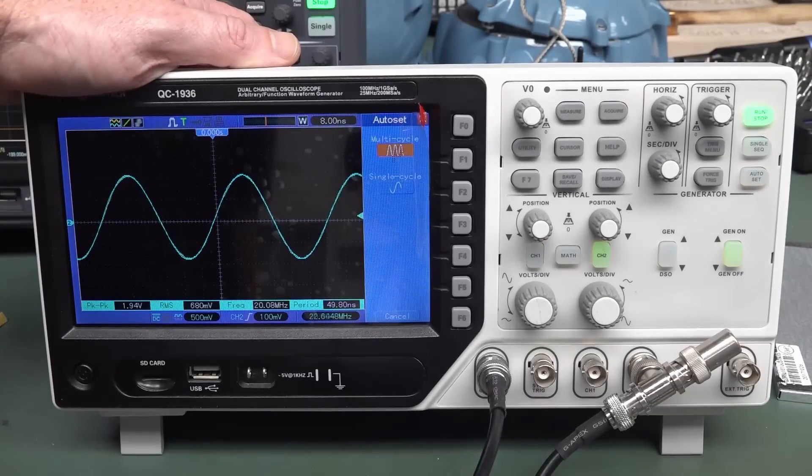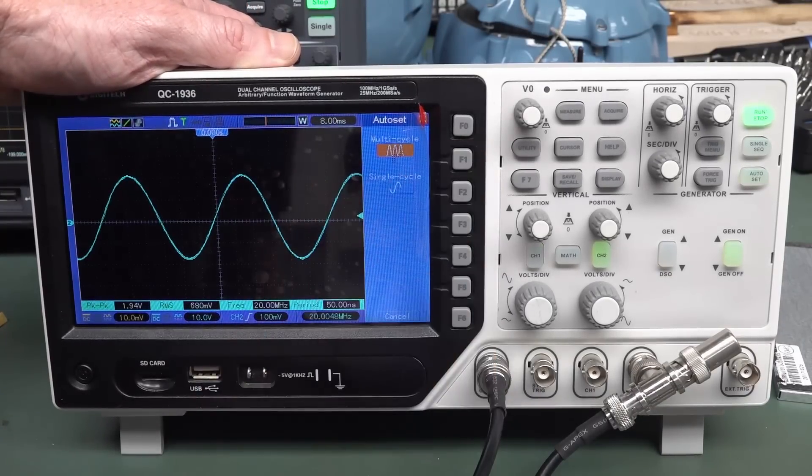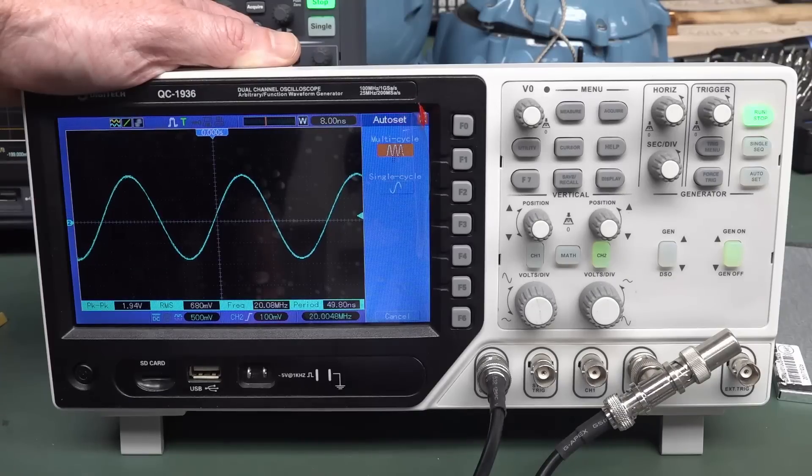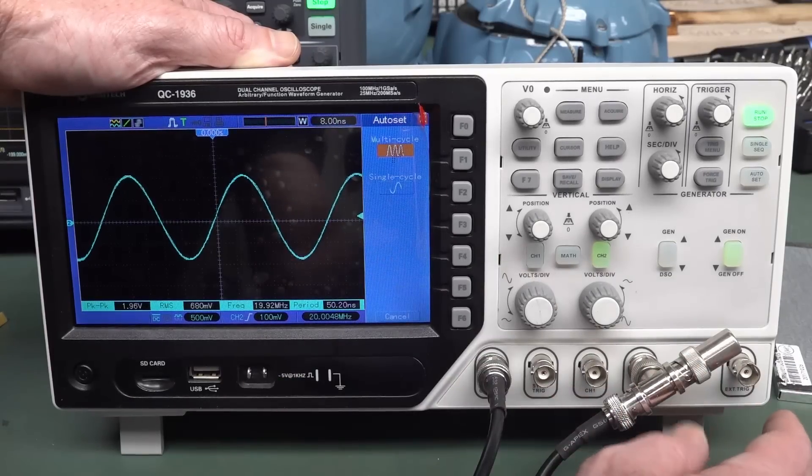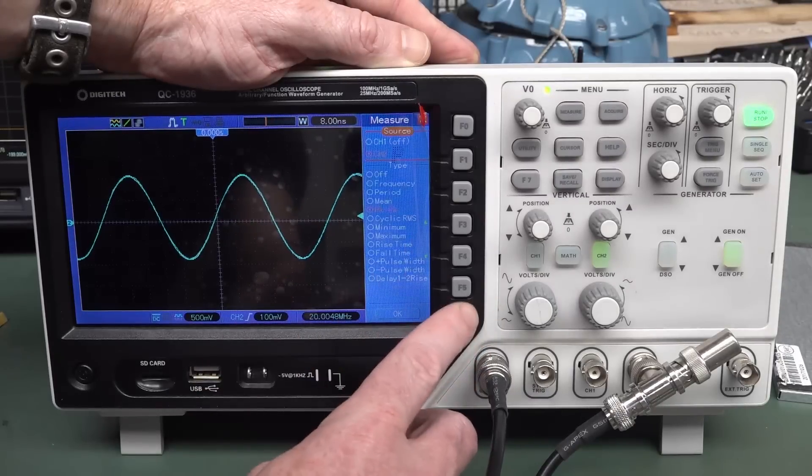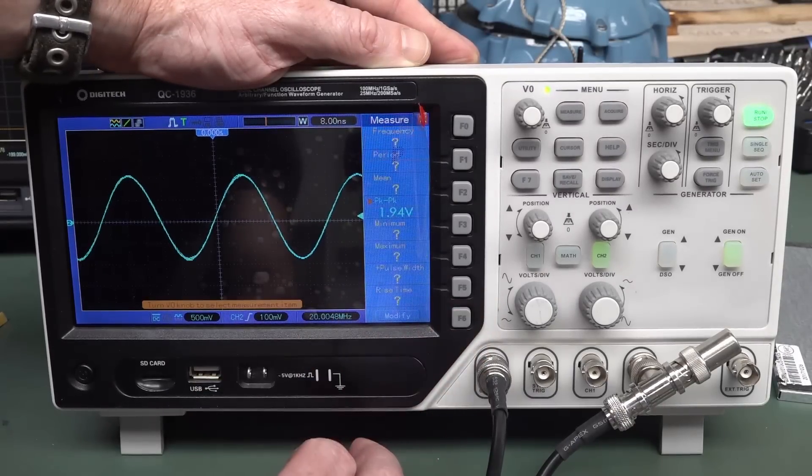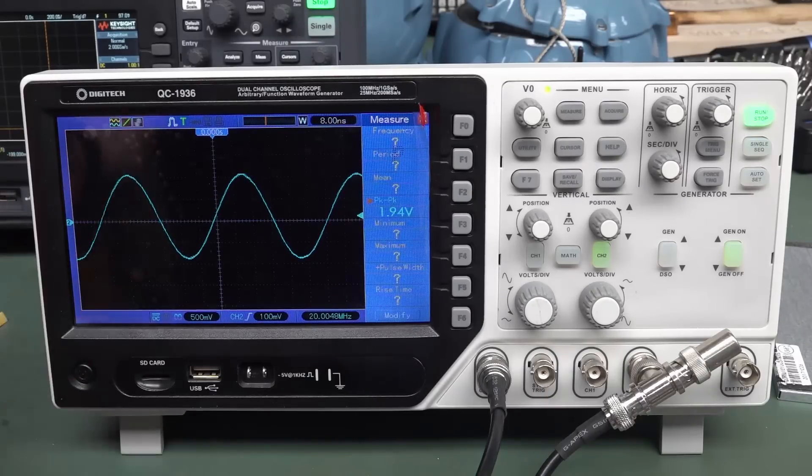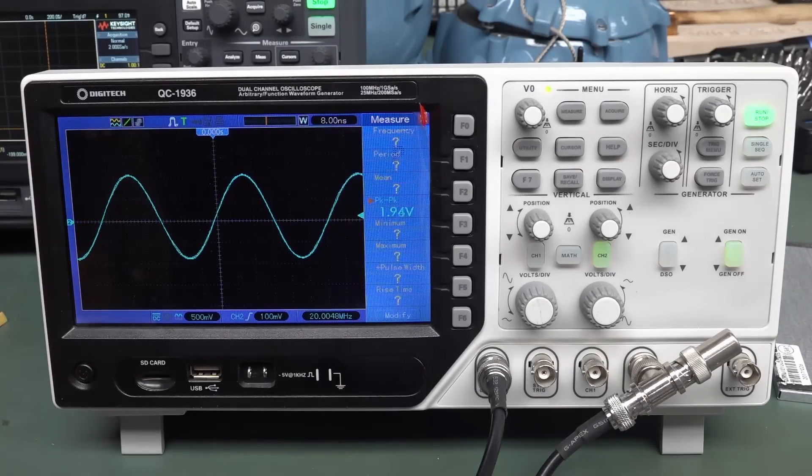Anyway, let's test channel two. Multi, auto set, multi cycle, single cycle, multi cycle. All right. Click in, click in, click in. There we go. Right. It wasn't displaying that menu before. Anyway, we're in, there we go. Channel two, and then, okay. And we get our 1.94. There you go. And it's changed colors too. So there you have it. That's good enough for Australia. That's near enough.